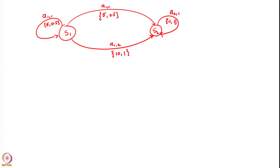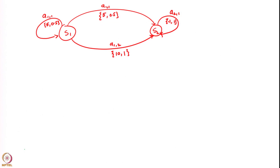The addition I am going to make is to add another action here, let us denote this action by a13. a13 is the action that we can take in state S1. So now we can actually take three different actions in S1: a11, a12, and a13.